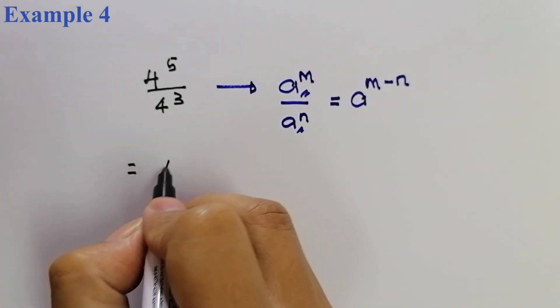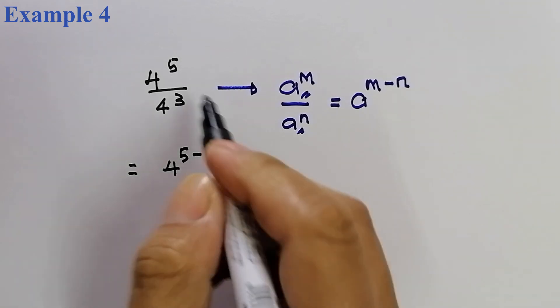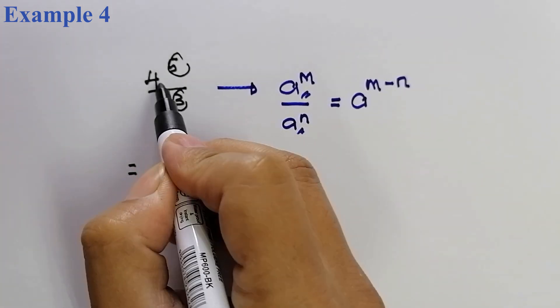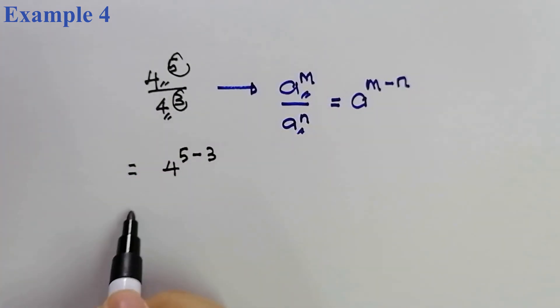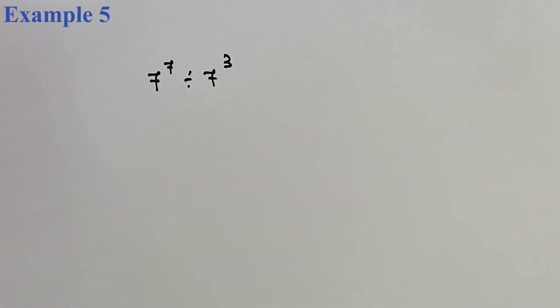Sama seperti kes untuk soalan yang ini. So, maksudnya sekarang 4 power 5 tolakkan dengan. Kenapa kita boleh buat? Because base dia adalah sama. So, isi itu 4 power of 2. So, kalau kita selesaikan tekan calculator, persamaan ini sama seperti jawapan dia adalah 16.